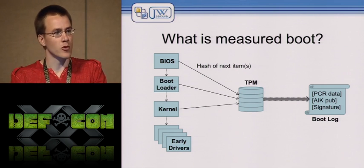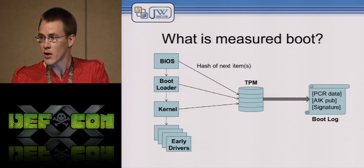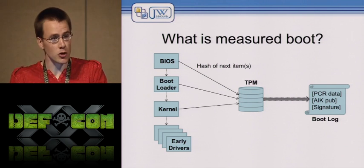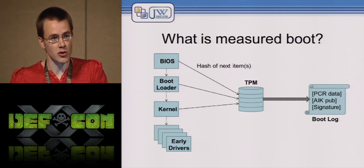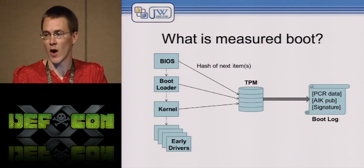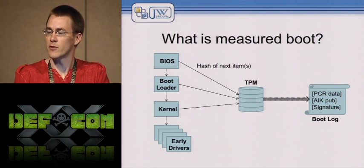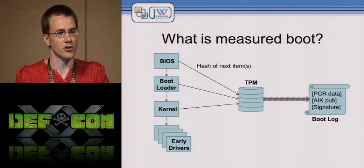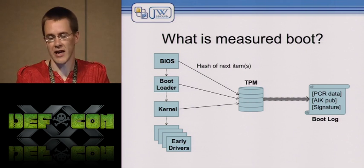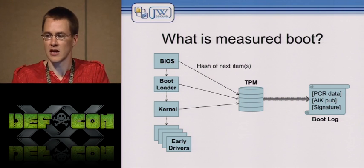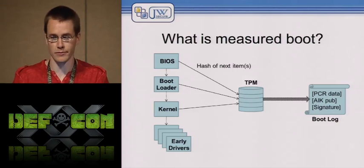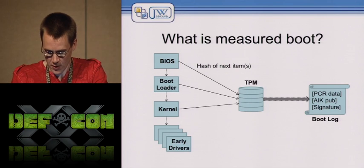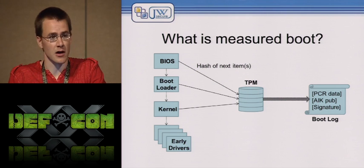After boot, a boot log can be retrieved from the TPM. The log includes boot image hashes and code signing information — so you don't just need a whitelist of hashes; you can also track certificate chains. For example, you can decide you trust the Microsoft certificate chain and the OEM certificate chains for your supported hardware (HP, Intel, etc.), which is a smaller list than hashing every possible early boot driver. The log also includes other boot metadata, and importantly, the TPM can sign the log with a special-purpose Attestation Identity Key, or AIK.